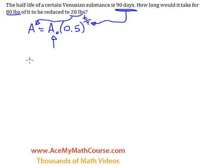So that's the final amount and it will go over there. So 20 is equal to 80 times 0.5 to the power of little t over 90.